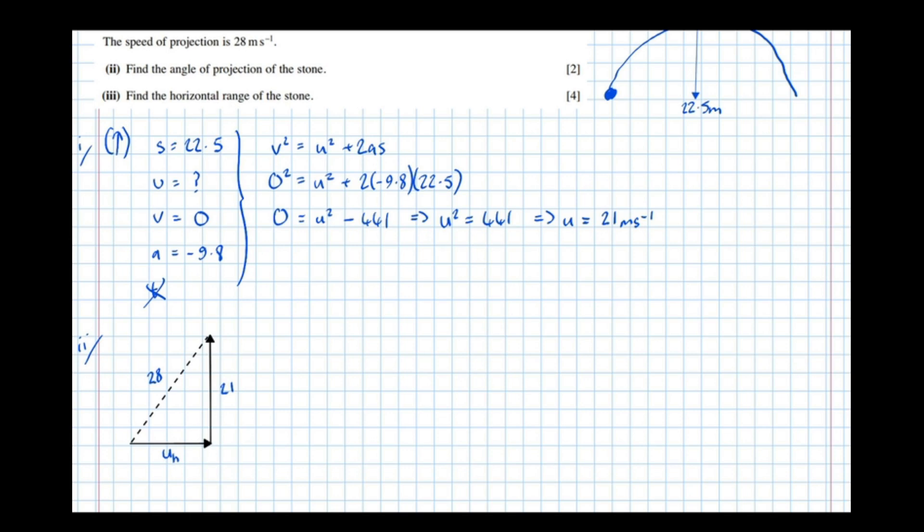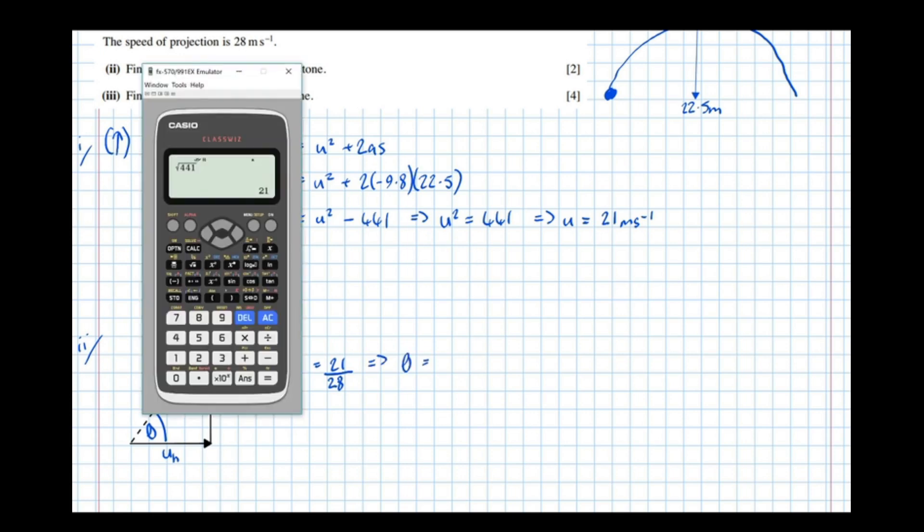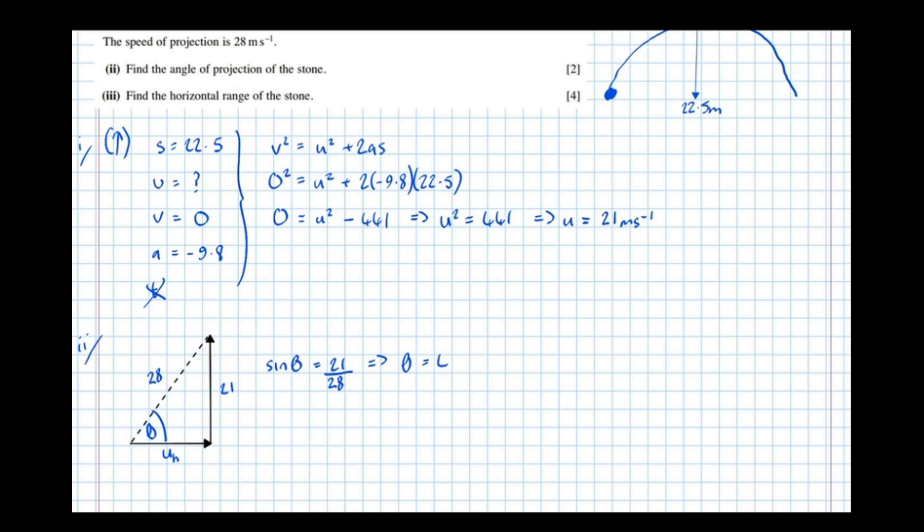So we'll get this information on a diagram. So the speed of projection is 28. The vertical component will just work out to be 21. And we don't know the horizontal component. Let's call that U with a subscript H. Well, first of all, the angle of projection, we can easily find that out using trigonometry. So make that the angle theta. We know that we've got the opposite and the hypotenuse. So sine theta equals the opposite 21 over the hypotenuse 28, which means that theta equals, if we inverse sine, 21 over 28.